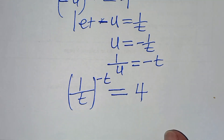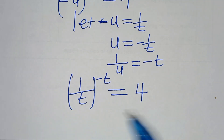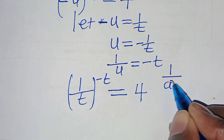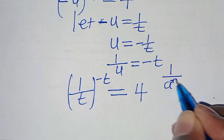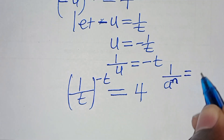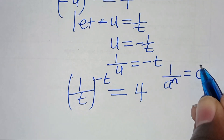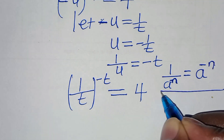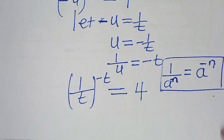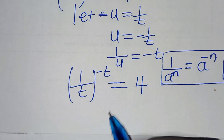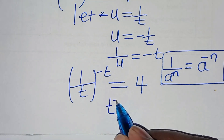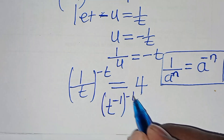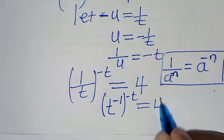Now, we have 1 over t raised to the power of minus t equals 4. We note that 1 over a to the power of n can be expressed as a to the power of minus n. Applying this property, we have t to the power of minus 1, raised to the power of minus t, this is equal to 4.